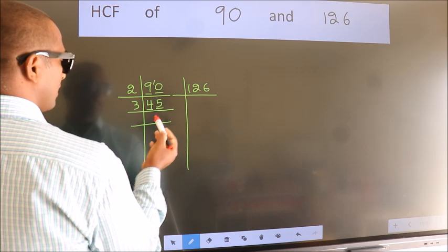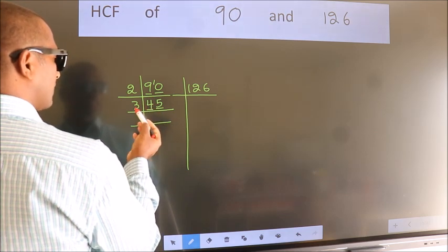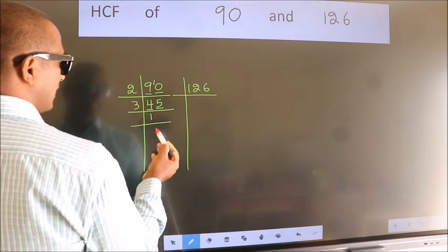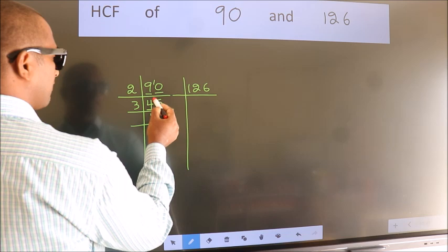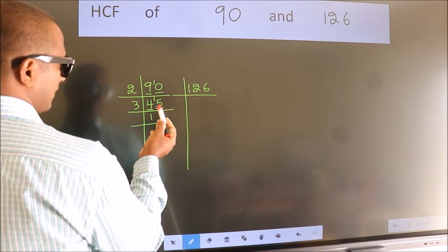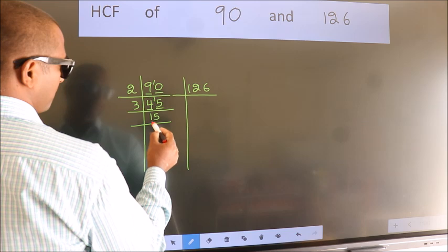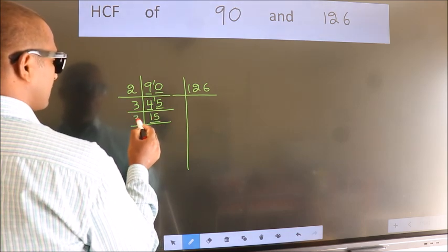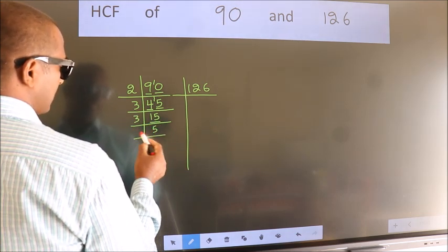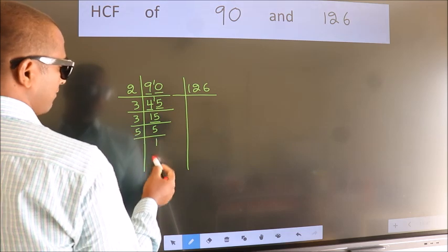First number 4. A number close to 4 in 3 table is 3 once 3. 4 minus 3, 1. 1 carried forward 15. When do we get 15 in 3 table? 3 fives 15. Now, 15 is 3 fives 15. 5 is a prime number, so 5 once 5.